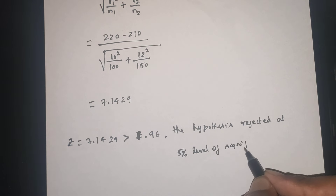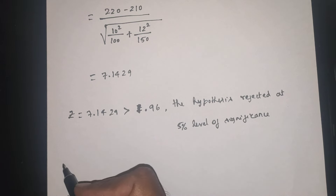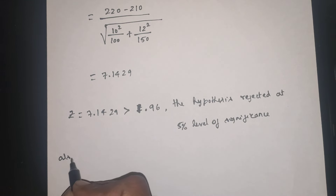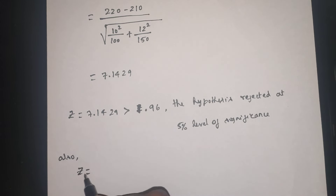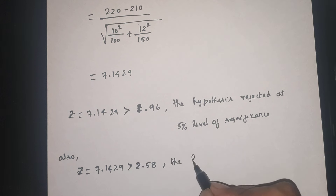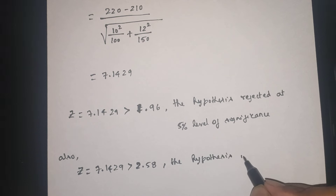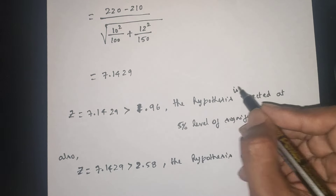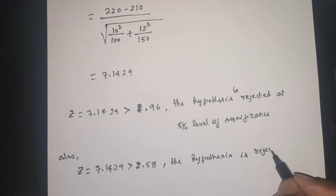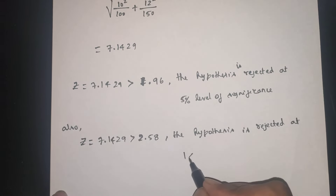Also, Z = 7.1429 is greater than 2.58, the standard value at 1% level of significance. Therefore, the hypothesis is also rejected at 1% level of significance.